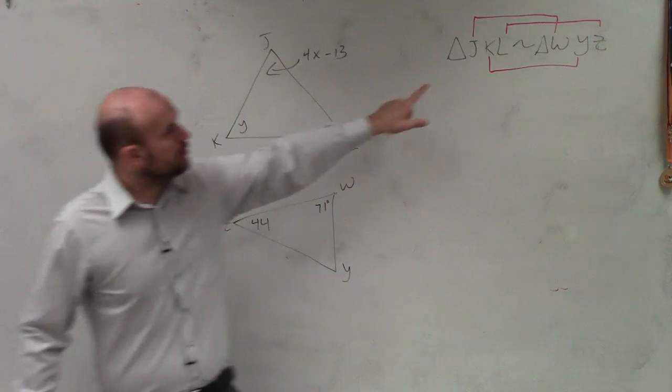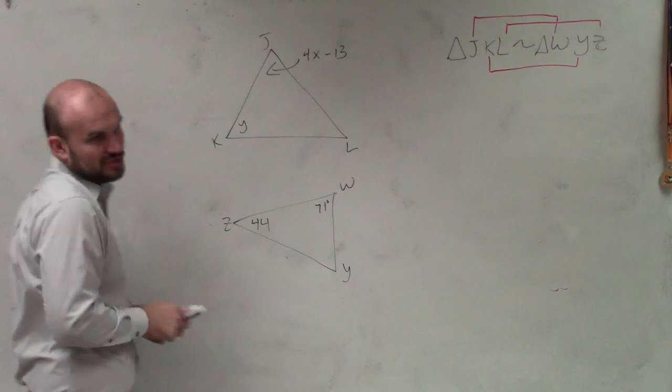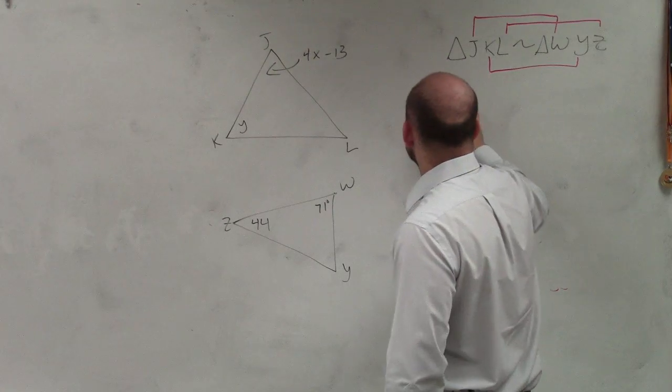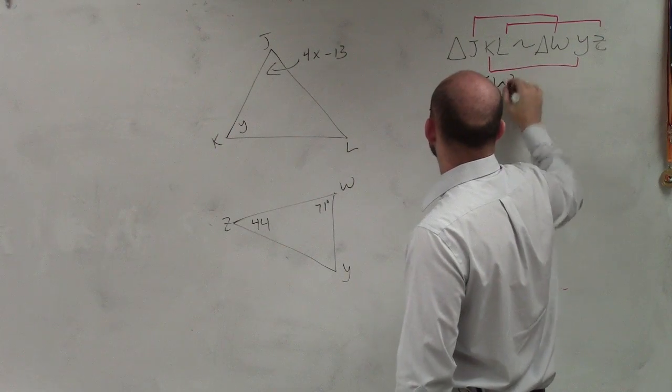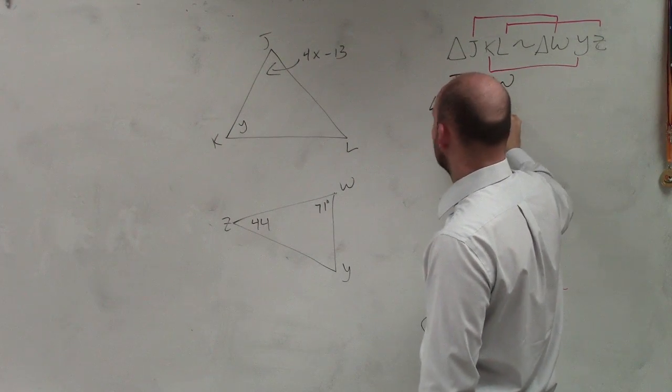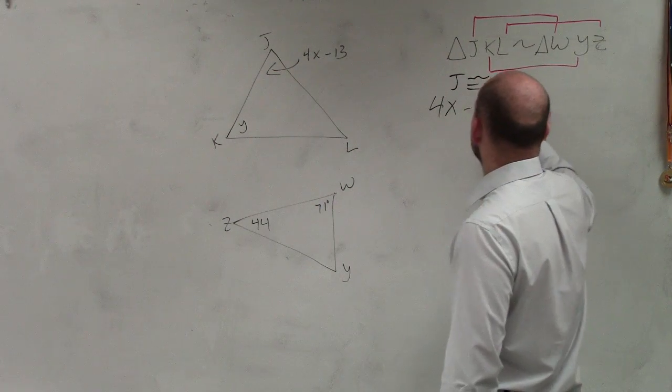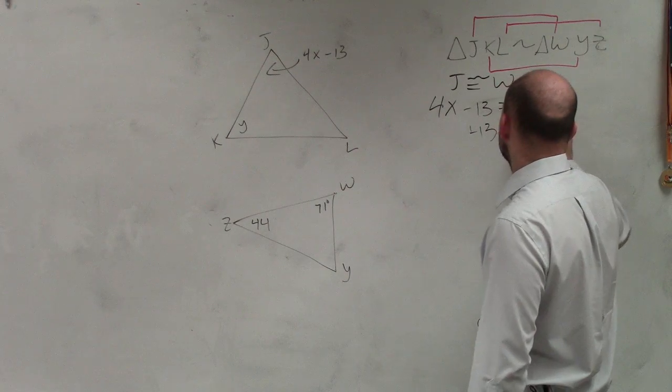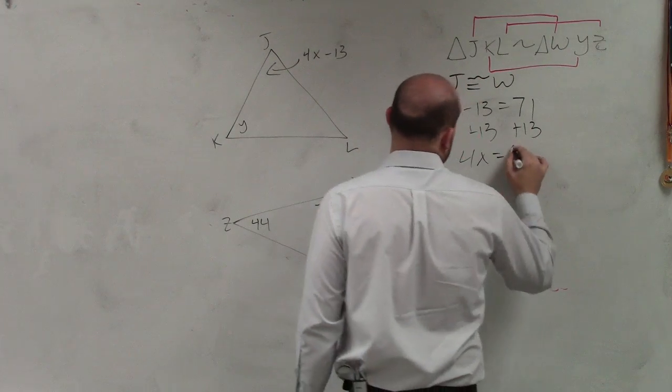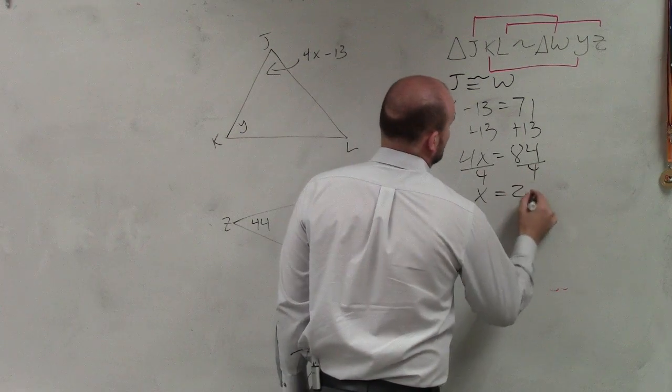So J corresponds to W. So to find x, all I simply need to do is say J is congruent to W. So 4x minus 13 is equal to 71. Then I just solve for x. Add 13 on both sides. 4x equals 84. Divide by 4. X equals 21.